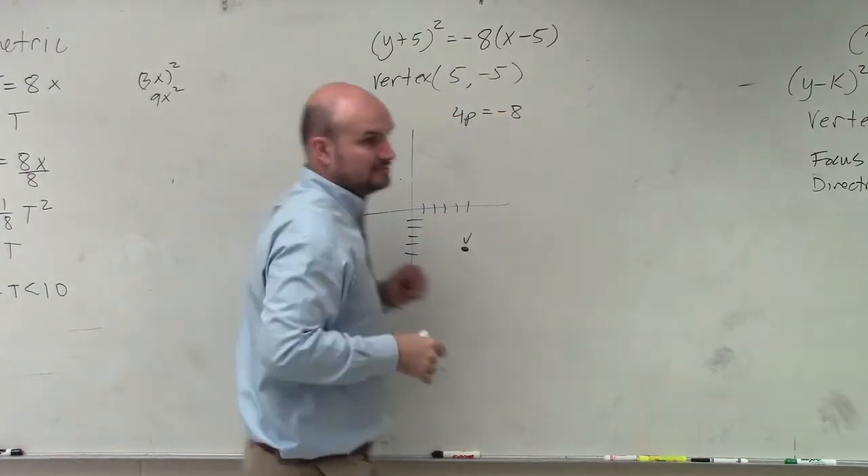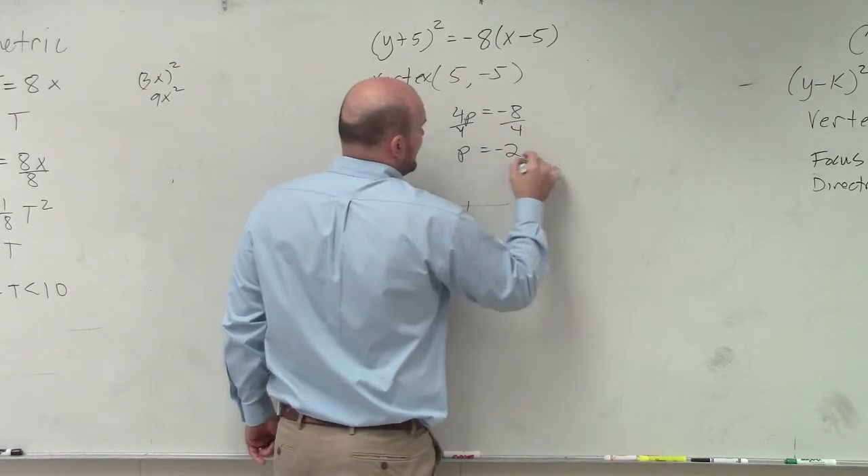The next thing is we need to identify p. Now remember 4p is equal to negative 8. So now we're going to solve for p, divide by 4 on both sides. p is equal to negative 2.